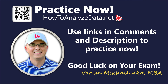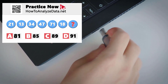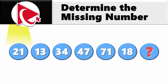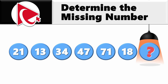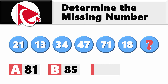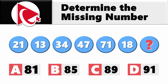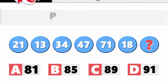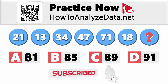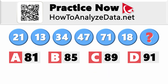This question reminded me of my experiences with a USB stick — it always feels like a 50-50 chance, but somehow it's never the right way for me. You're presented with a sequence of numbers: 21, 13, 34, 47, 71, 18, and then the missing number. Choices: A: 81, B: 85, C: 89, D: 91. Don't get discouraged — I'm pretty sure your chances are much higher than 50-50. Just give yourself enough time and think out of the box.